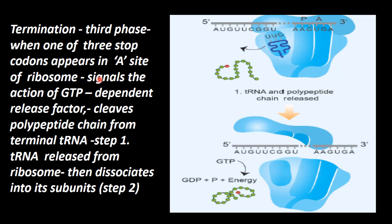When the stop codon comes into the A site, a release factor is triggered. The release factor is GTP-dependent. When the stop codon signal comes in, the GTP-dependent release factor cleaves the polypeptide chain from the terminal tRNA.